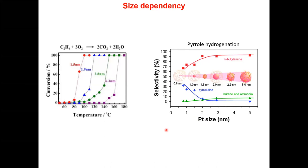When choosing a support, it should be as homogeneous as possible with not too many different surfaces. When making the catalyst, the metal particle size must be controlled to what we want. For instance, if we want more butylamine, we need a particle size slightly bigger than 2 nanometers. If we want more pyrrolidine, we need smaller particle size. This all depends on how we synthesize the catalyst.